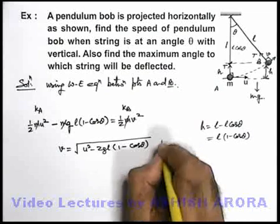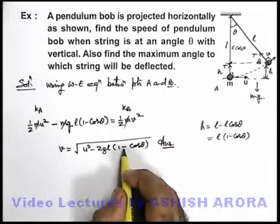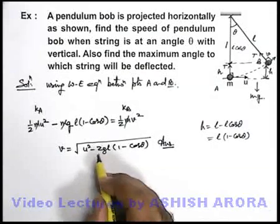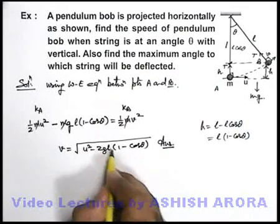So this would be the answer to first part of the problem, that is the speed of pendulum bob when it makes an angle theta if initial speed is u and pendulum length is l.